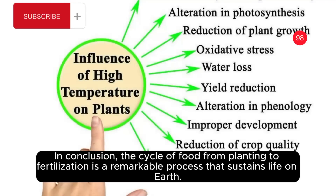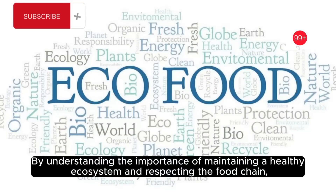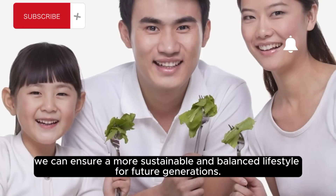In conclusion, the cycle of food from planting to fertilization is a remarkable process that sustains life on Earth. By understanding the importance of maintaining a healthy ecosystem and respecting the food chain, we can ensure a more sustainable and balanced lifestyle for future generations.